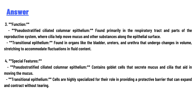Third, function: pseudostratified ciliated columnar epithelium is found primarily in the respiratory tract and parts of the reproductive system, where cilia help move mucus and other substances along the epithelial surface. Transitional epithelium is found in organs like the bladder, uterus, and urethra that undergo changes in volume, stretching to accommodate fluctuations in fluid content.